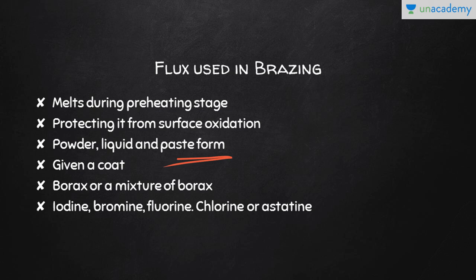Better results occur when the filler material is also given a coating. The most common type of flux used is borax, or a mixture of borax with other chemicals. Some commercial fluxes contain small amounts of phosphorus and halogen salts of iodine, bromine, fluorine, or chlorine. When a prepared flux is not available, a mixture of 12 parts of borax and 1 part of boric acid may be used.